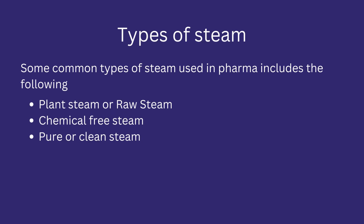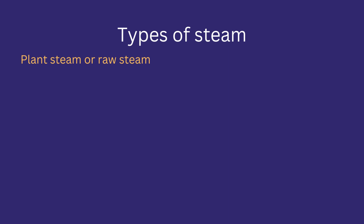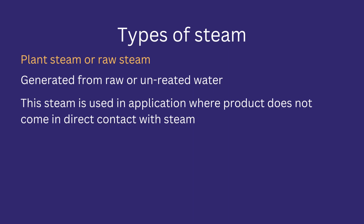Let's discuss the types of steam used in the pharma industry. Some common types include plant steam or raw steam, chemical-free steam, and pure or clean steam. Plant steam or raw steam is generated from raw untreated water. Since the feed water is raw and untreated, the steam produced is also low quality and cannot be used for critical applications such as where the steam comes in direct contact with the product.